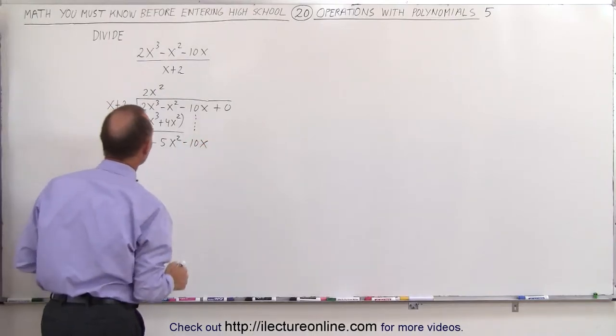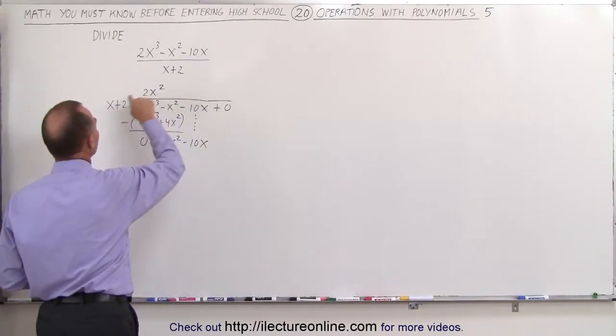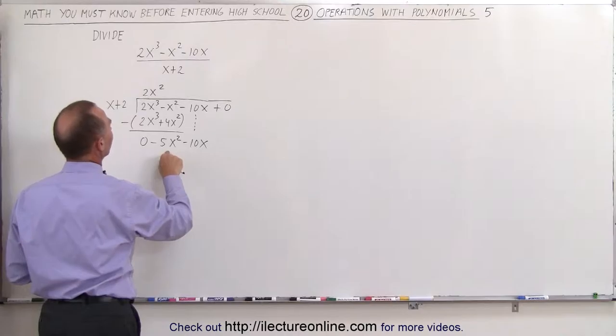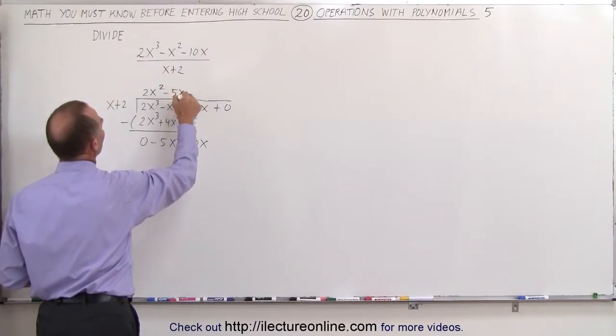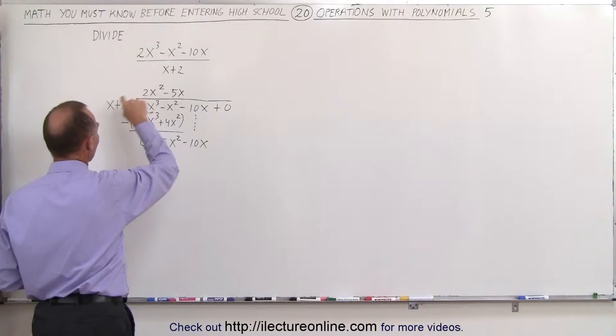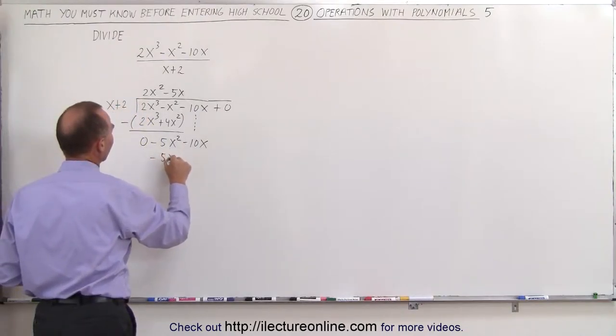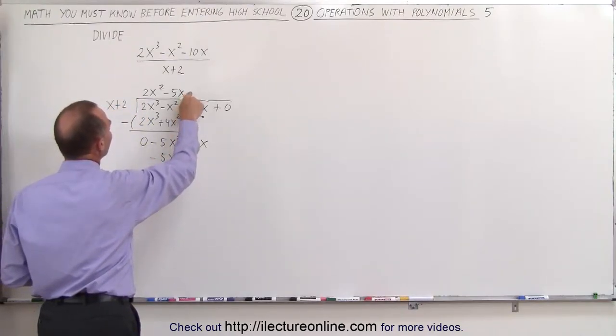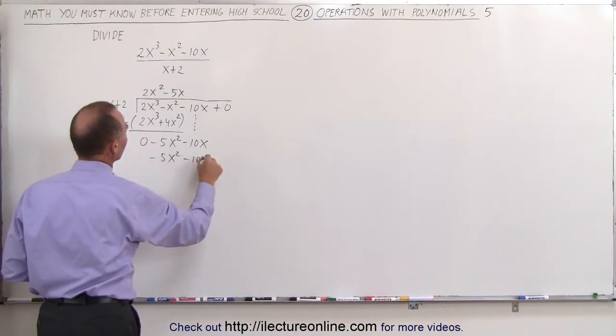minus 10x. And again, what number must we multiply times x to get minus 5x squared? Well, that would be minus 5x, because minus 5x times x gives us minus 5x squared, and then minus 5x times 2 gives us a minus 10x.